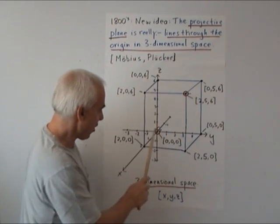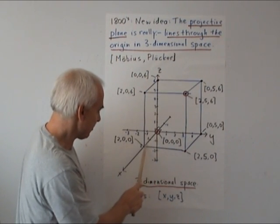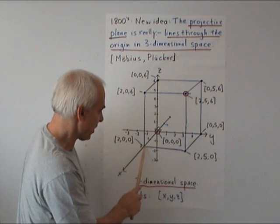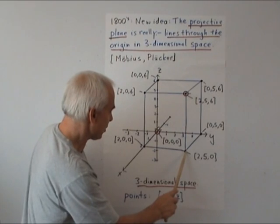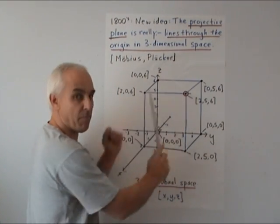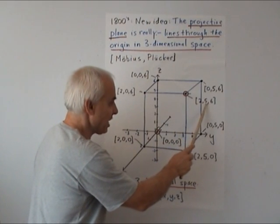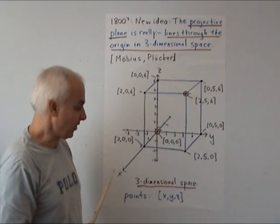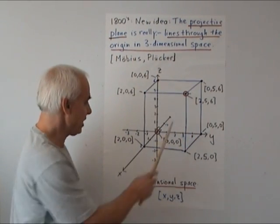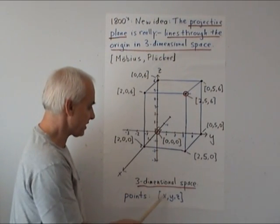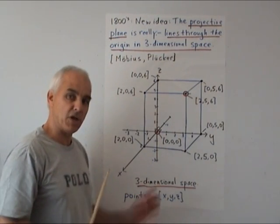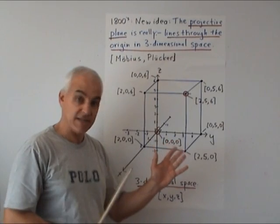For example, the point (2,5,6) is obtained by going two steps in the x-direction, taking five steps in the y-direction, and six steps in the z-direction. We can combine those steps by drawing a box extending two units in this direction, five units in this direction, and six units up. That corner of the box is the representation of the point (2,5,6).